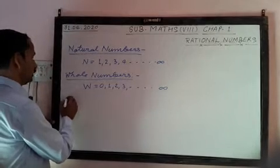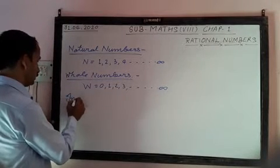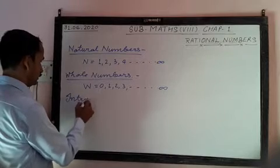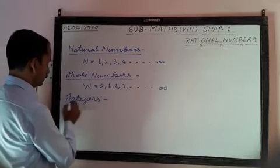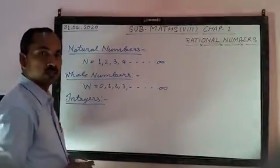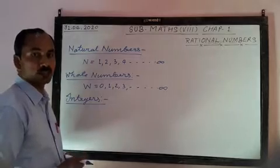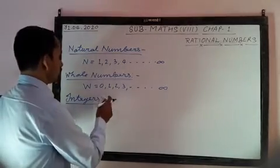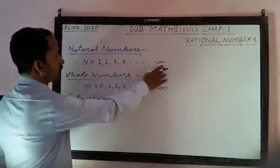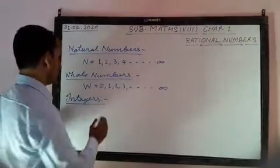Next one: integers. After that we will read about the integers. And integers also we have studied in pre-classes. If we include the negative of all natural numbers into the whole numbers, we get the collection of integers.